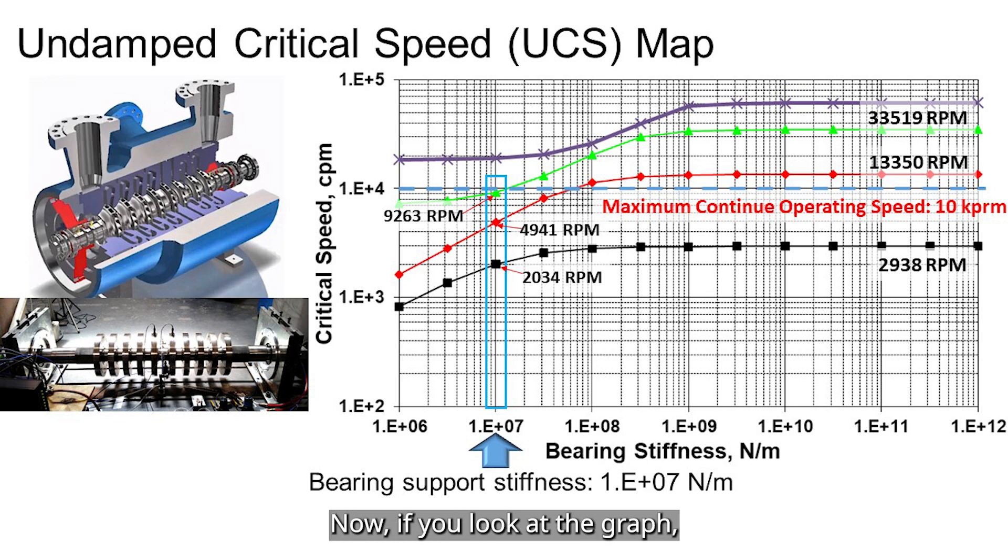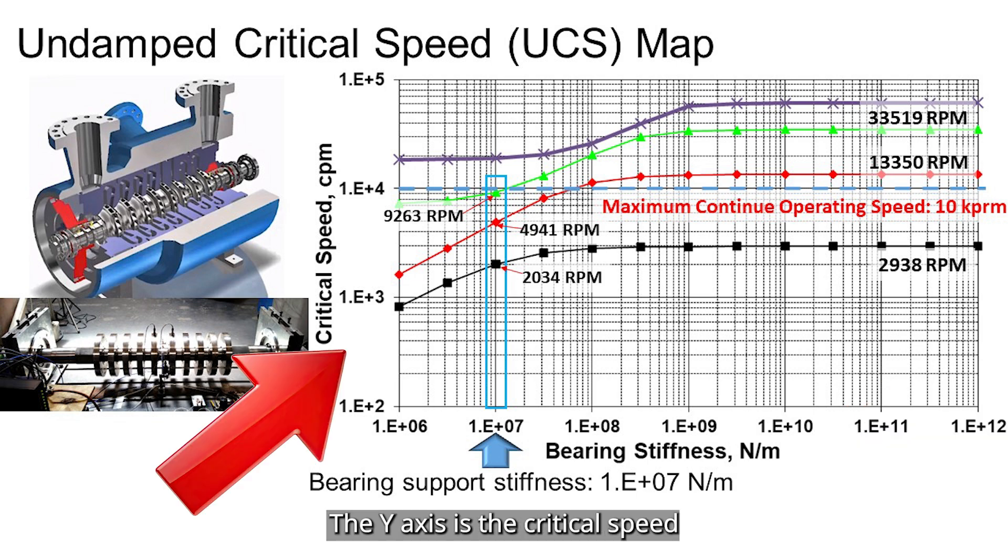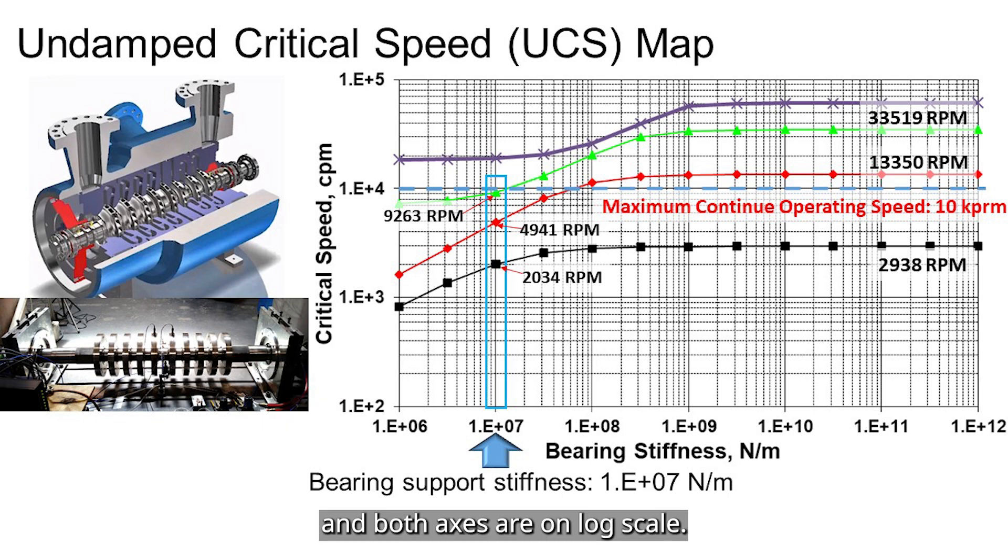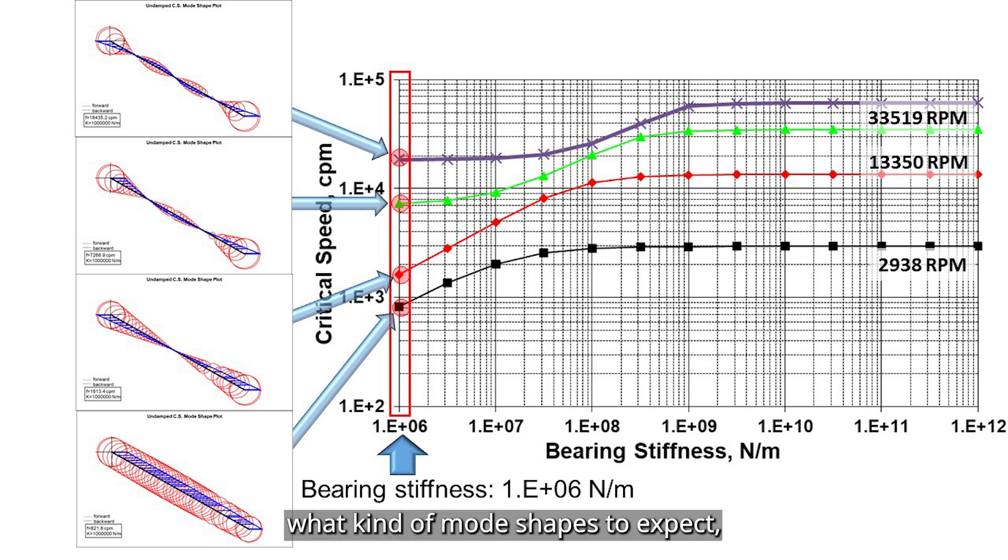Now, if you look at the graph, the X-axis is the bearing support stiffness, the Y-axis is the critical speed, and both axes are on log scale. This map helps us understand how the rotor behaves as the support stiffness changes. For example, it gives us a rough idea of where the critical speeds are and how sensitive they are to changes in support stiffness. It also tells us what kind of mode shapes to expect, which is really important when trying to predict vibration behavior.